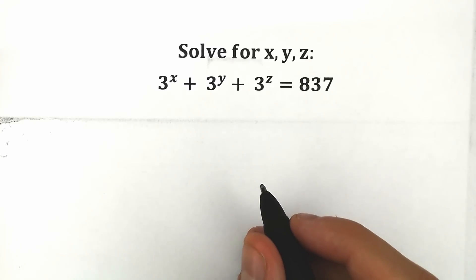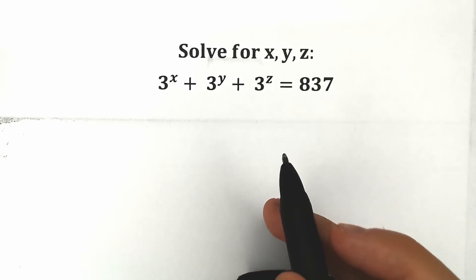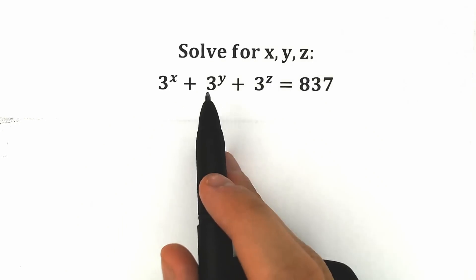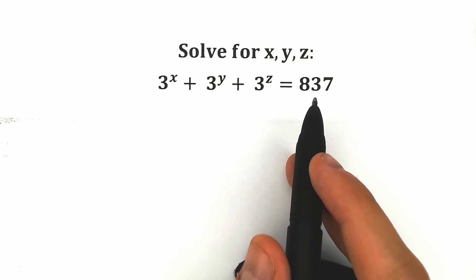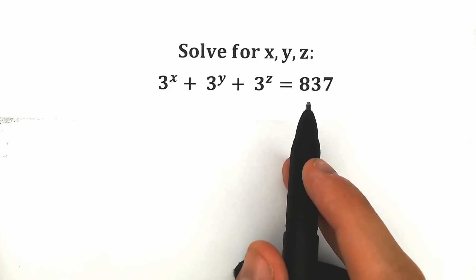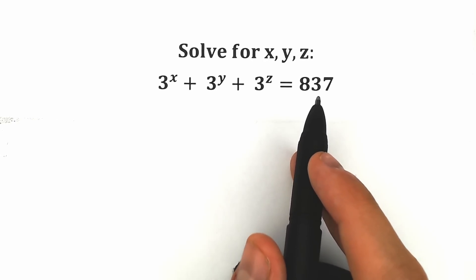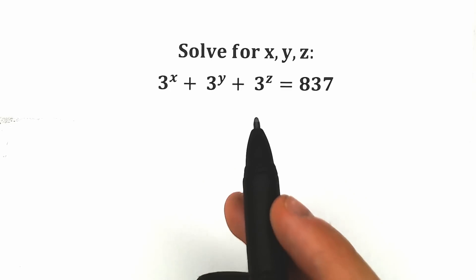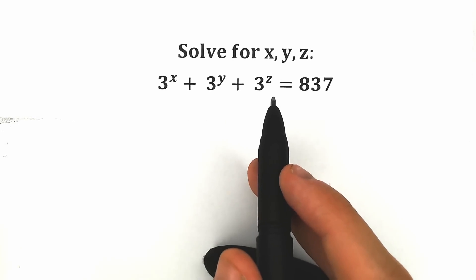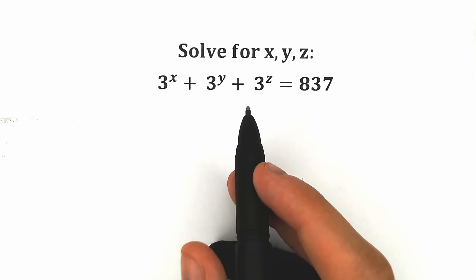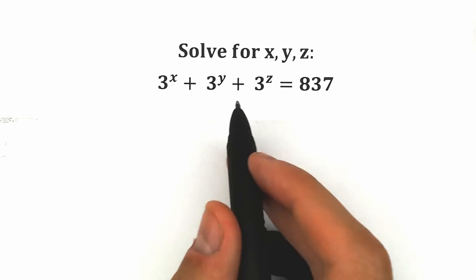Hello everyone! Welcome back to my channel Higher Mathematics. Today we have a really interesting interview question. We have 3 to the x plus 3 to the y plus 3 to the z equal to 837, and we need to find x, y, and z. If you have your own solution you can write it down in the comment section and we will check our answers. It will be a great challenge to compare answers at the end of the video.